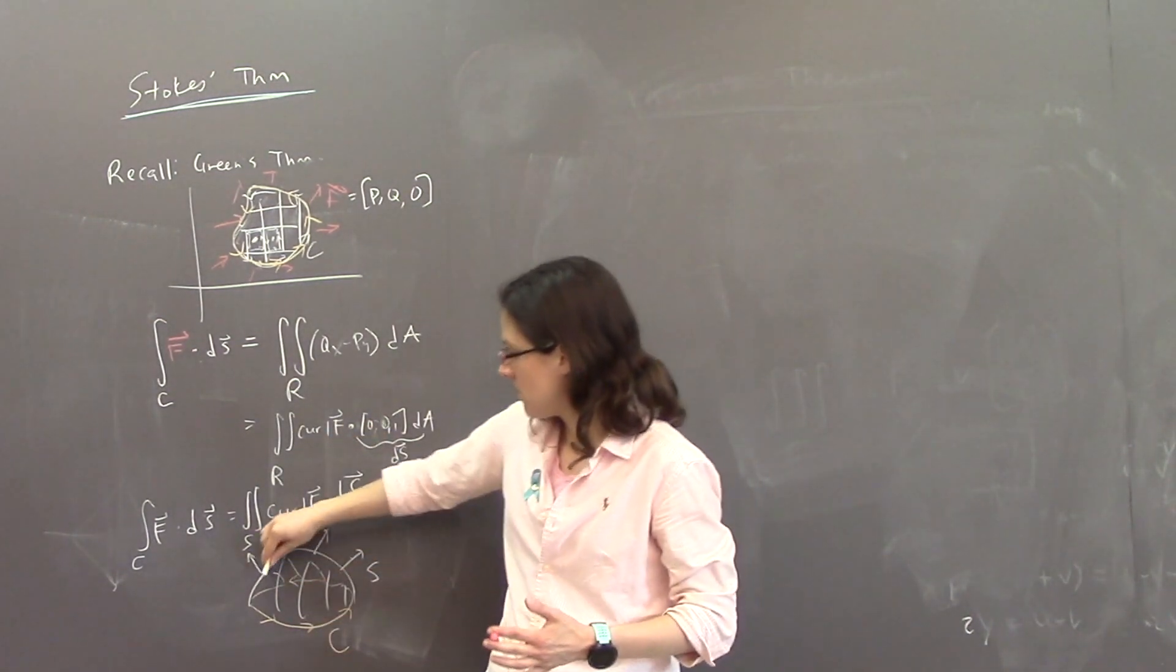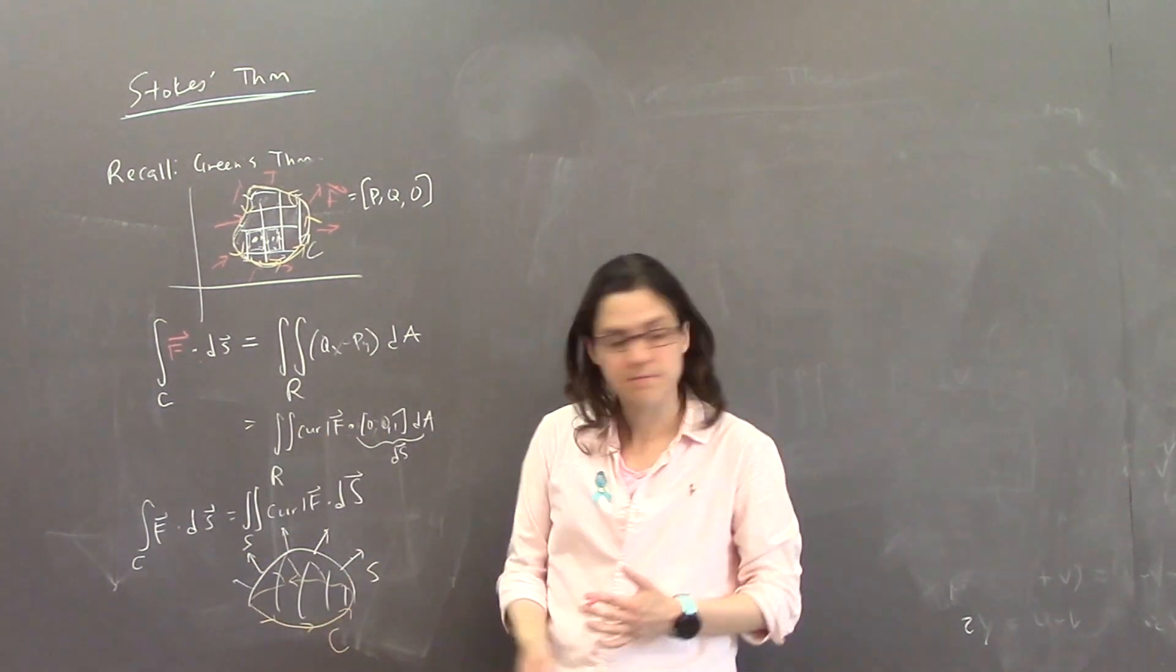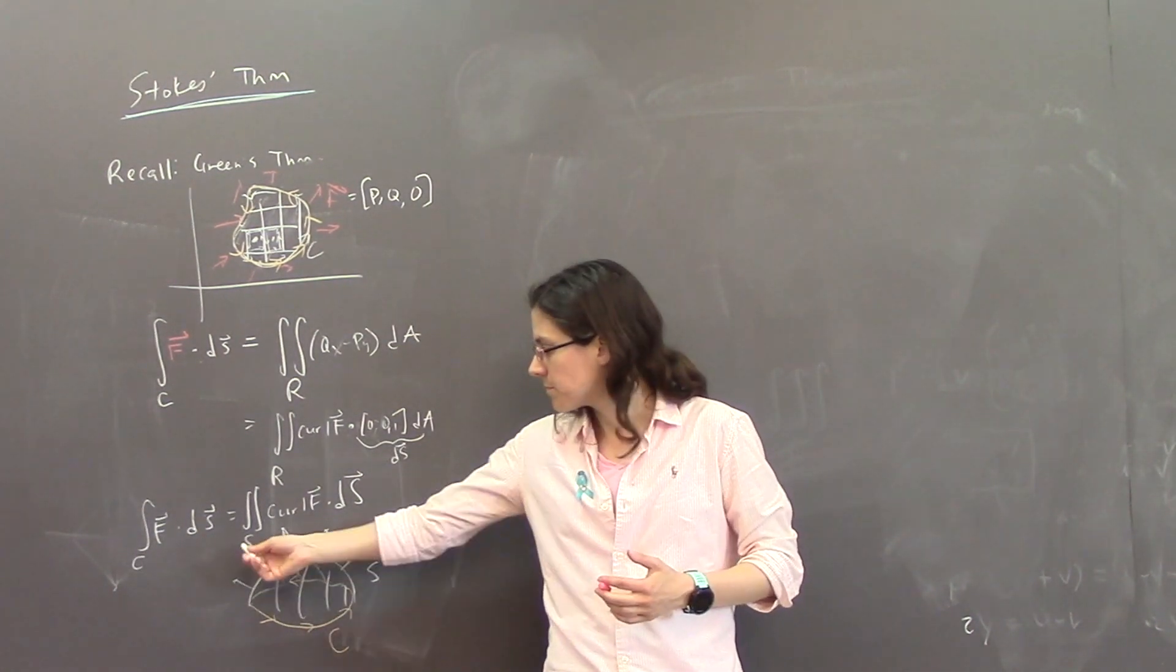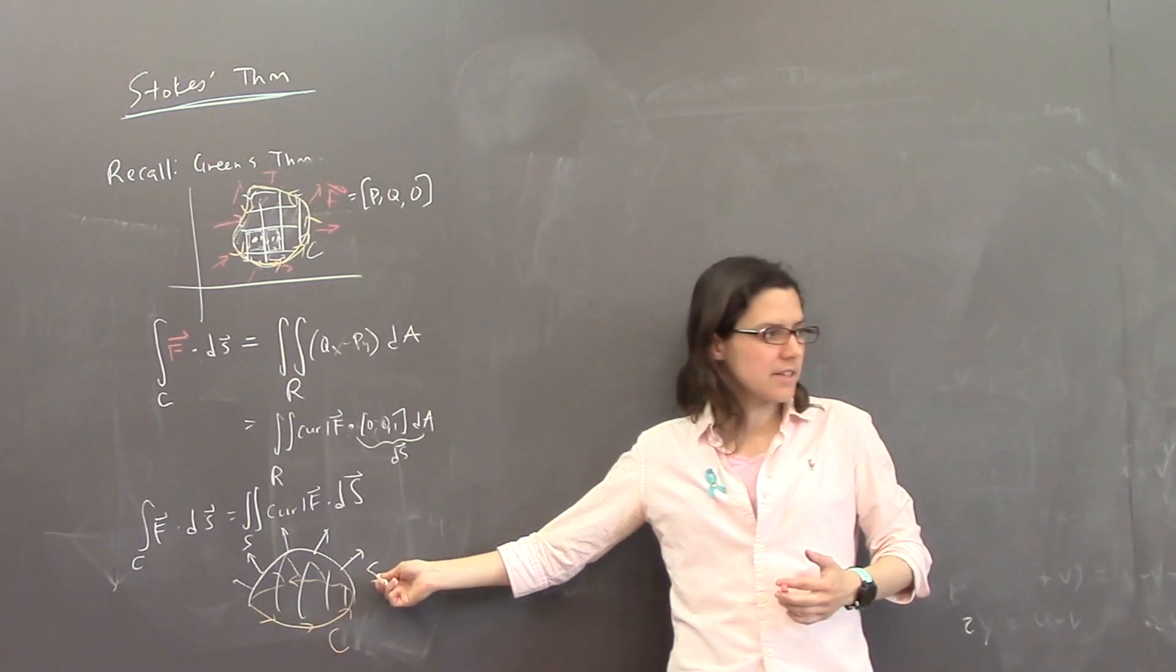And so those vectors, they come out. Let me blow it out. Yeah? So the S on the right-hand side of, like, the lower equation, that's, like, the surface, right? That's the surface. Yep, oriented surface S.